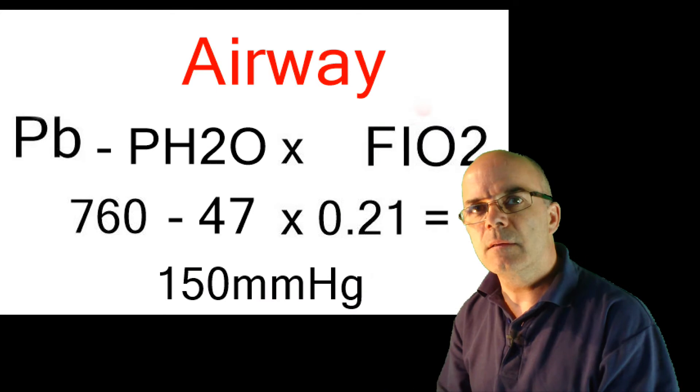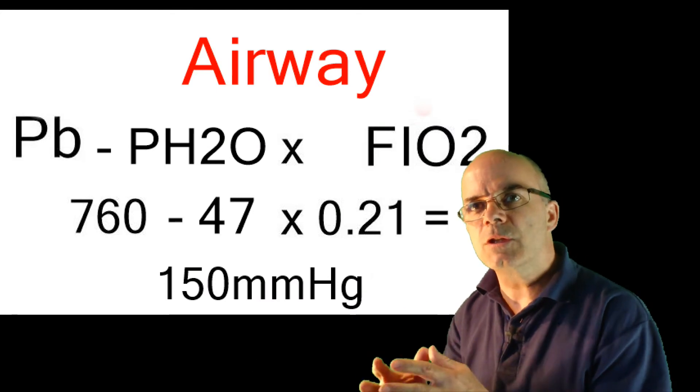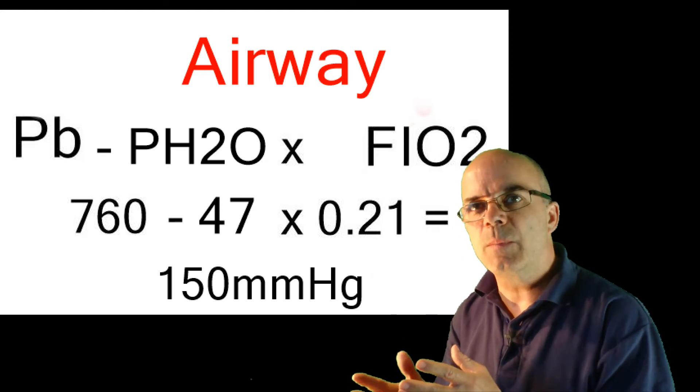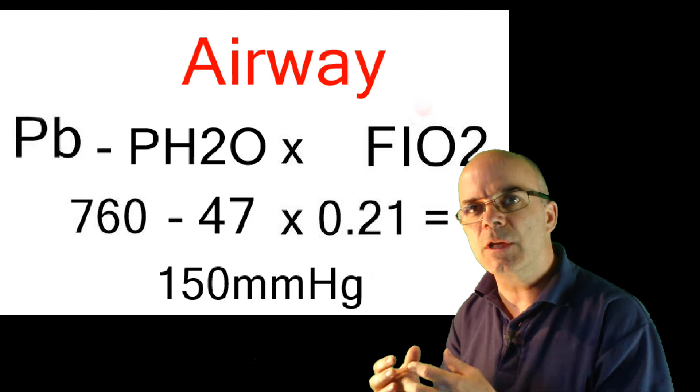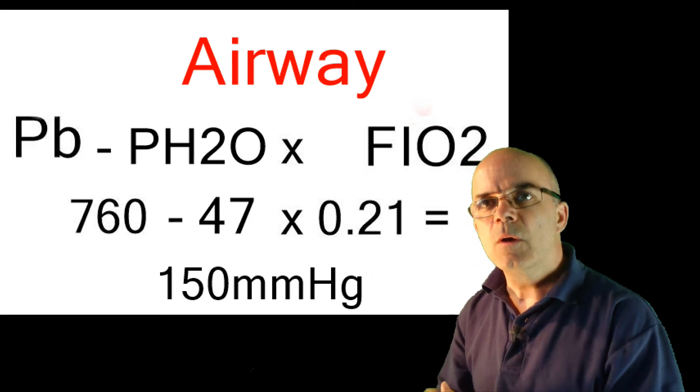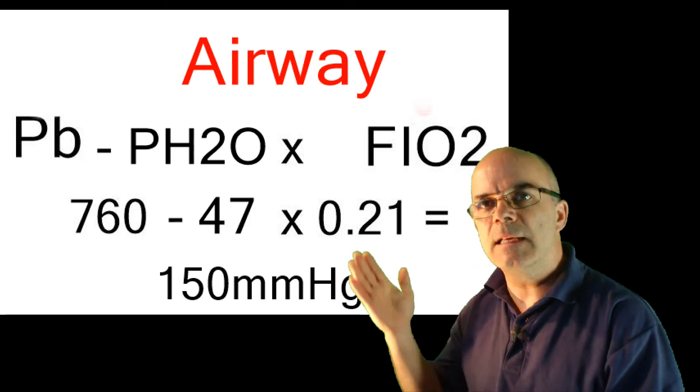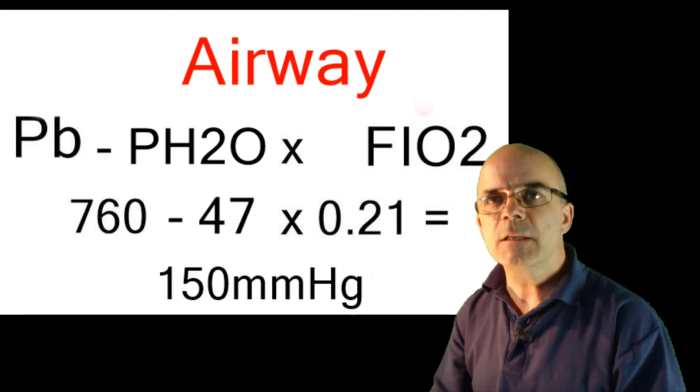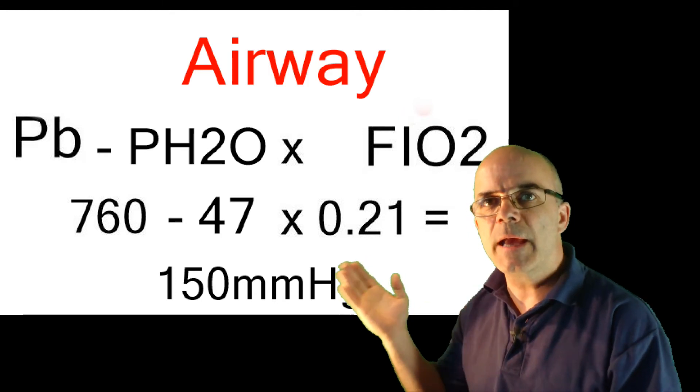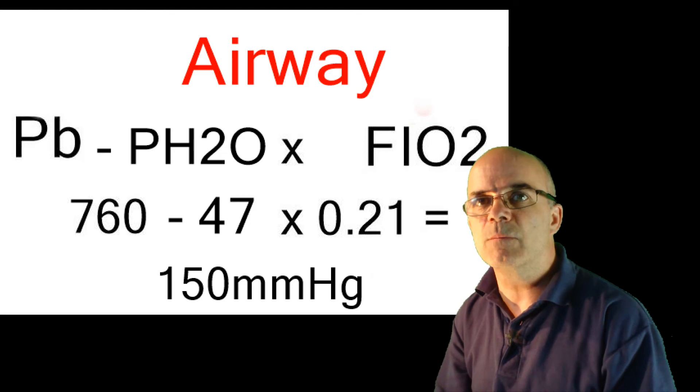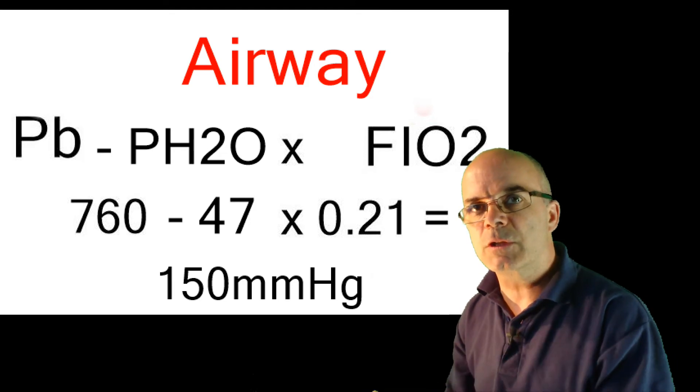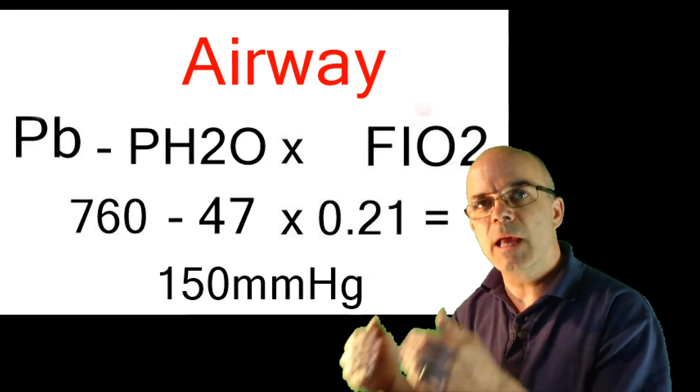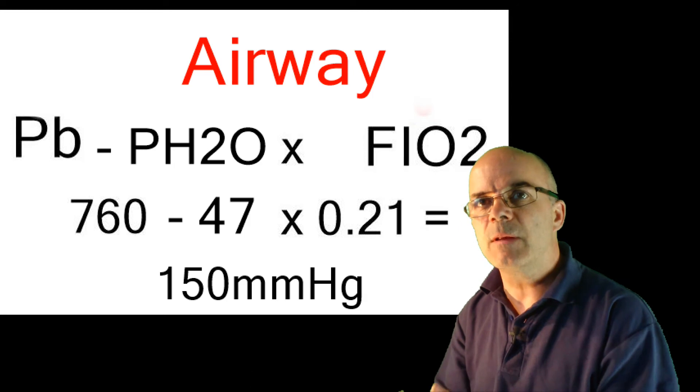Next, on to the airway. As soon as this oxygen is inhaled, it will lose pressure in the airway. This is because there is water vapor, which also exerts a pressure in the airways. So now we have atmospheric pressure at sea level, Pb, which we just worked out to be 160 mmHg, minus water vapor pressure, PH2O, which is 47 mmHg, multiplied by the percentage of oxygen, 0.21. So now the pressure of oxygen in the airway is 150 mmHg.